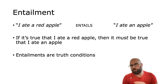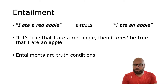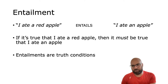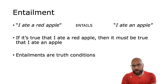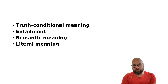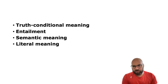We say the first one entails the second one. And if you think about it, you should be able to see that entailments are the same thing as truth conditions. For I ate a red apple to be true, then the sentence I ate an apple has to be true — that's part of the truth conditions of the sentence I ate a red apple. So these are very closely related, and throughout this class you might see me using these terms interchangeably: truth conditional meaning, entailment, semantic meaning, literal meaning. These are all essentially the same things.